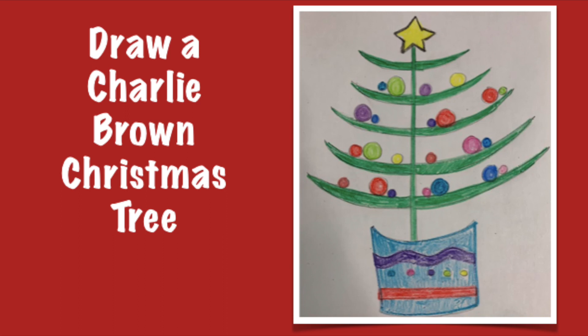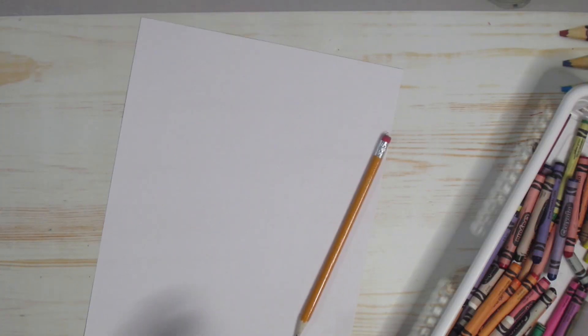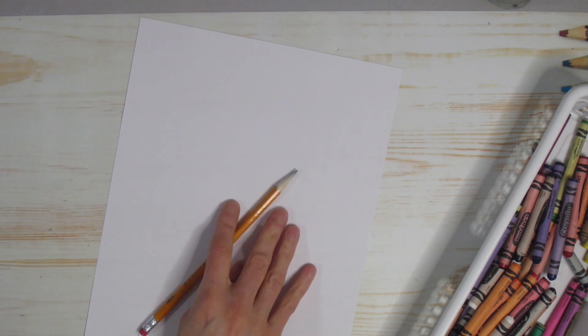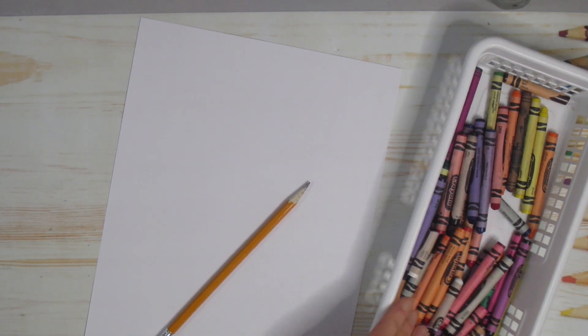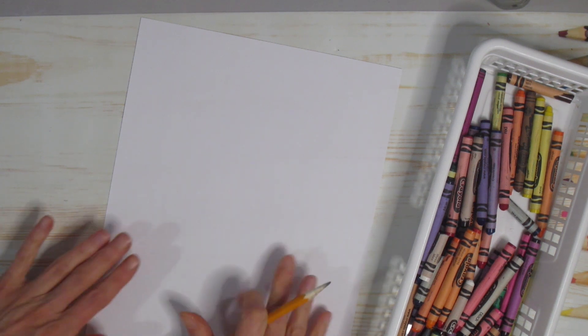Today we're going to draw a Charlie Brown Christmas tree. All you need today is a pencil, a piece of paper, and something to color with. Today I am using crayons, but use whatever you have. Paints would be awesome for this.